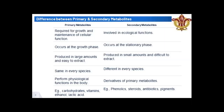The basic difference between primary and secondary metabolites: primary metabolites are required for growth and normal cellular function; secondary metabolites perform ecological functions. Primary metabolites occur at the growth phase, whereas secondary metabolites occur at the stationary phase. Primary metabolites are produced in large amounts and are easy to extract, whereas secondary metabolites are produced in small amounts and are difficult to extract — requiring a particular solvent, mechanism, and procedure.